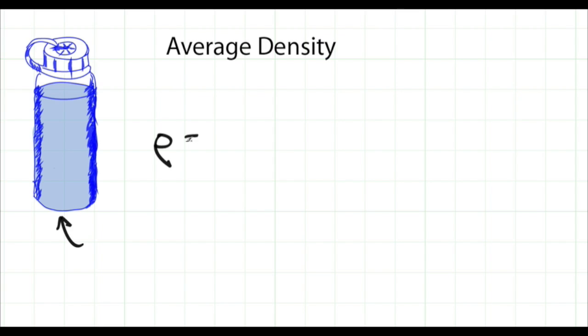I define the density here as the mass of the water in grams divided by the volume of water inside this container. For a one liter bottle of water, the amount of mass would be one kilogram.